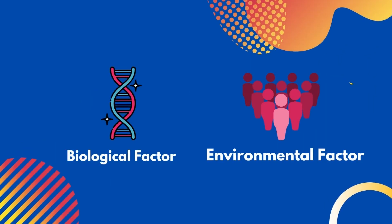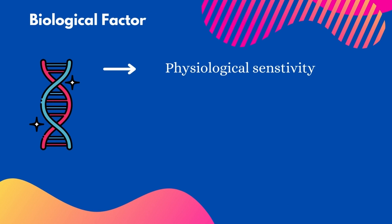There are two main factors that contribute to addictive behaviors: biological and environmental factors. Both factors influence how addictive behaviors are formed in children at an early age. Everyone has a unique biology, and their genes and physiological sensitivity to illicit substances plays an important role in their risk of becoming addicted and abusing substances.